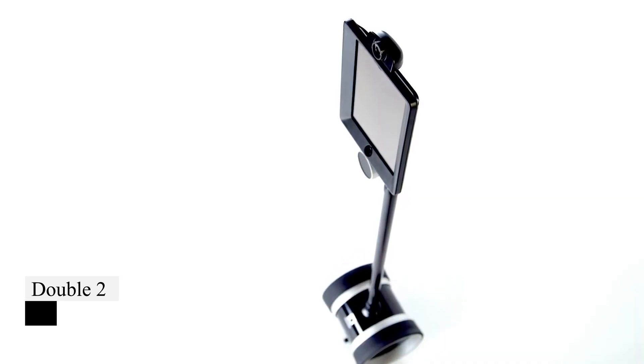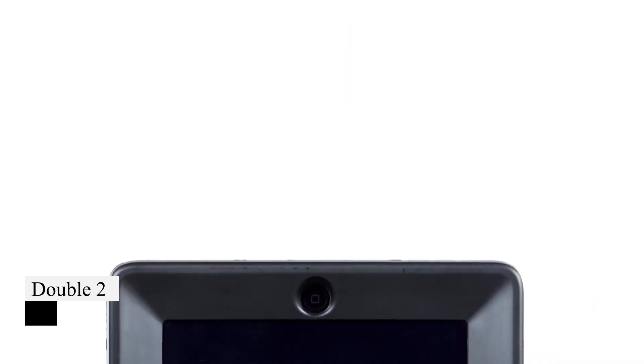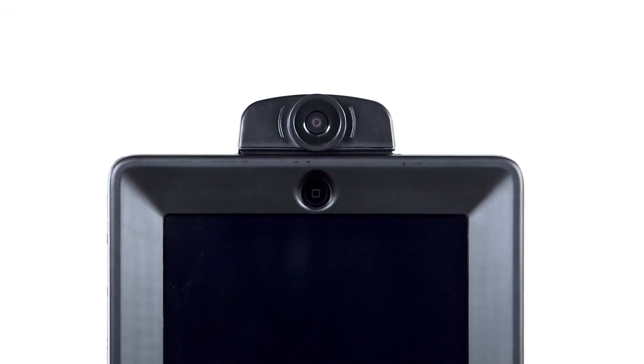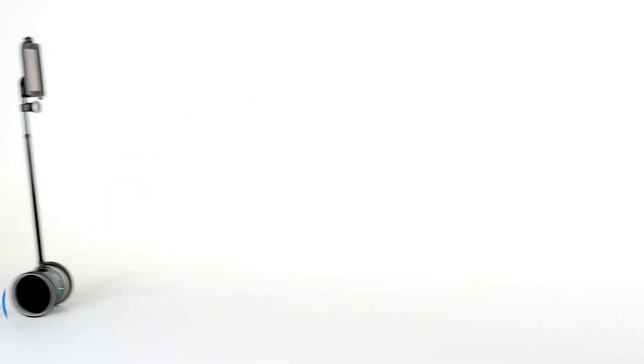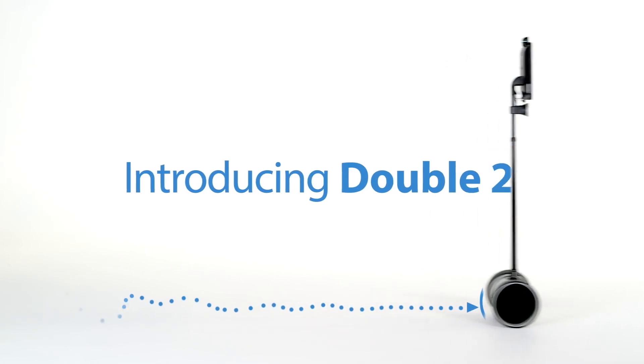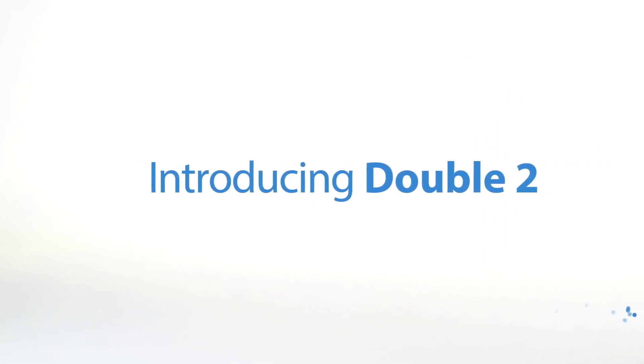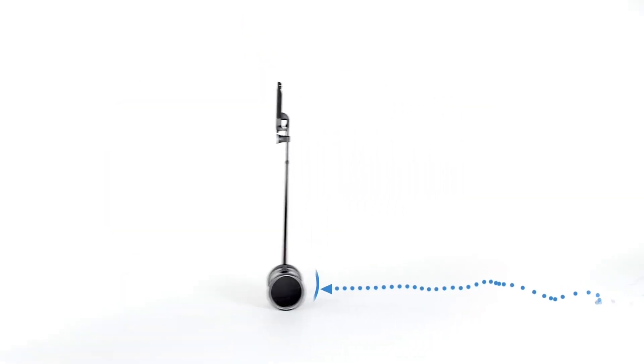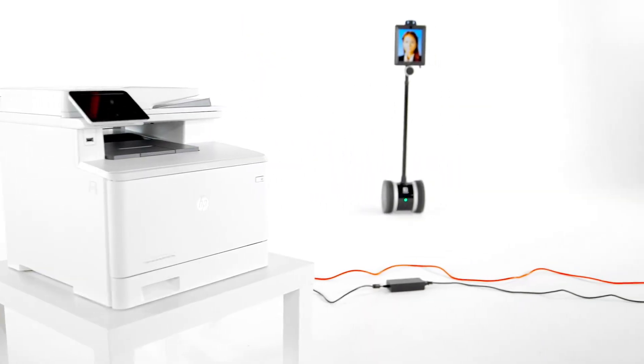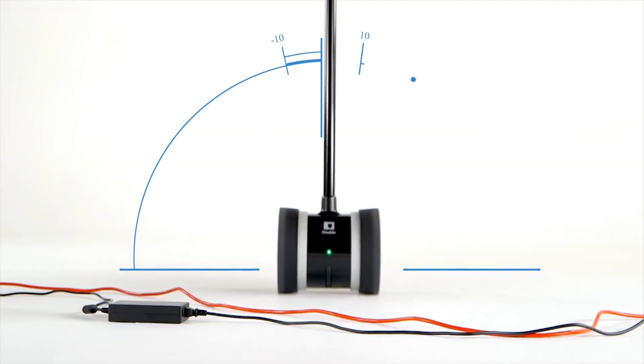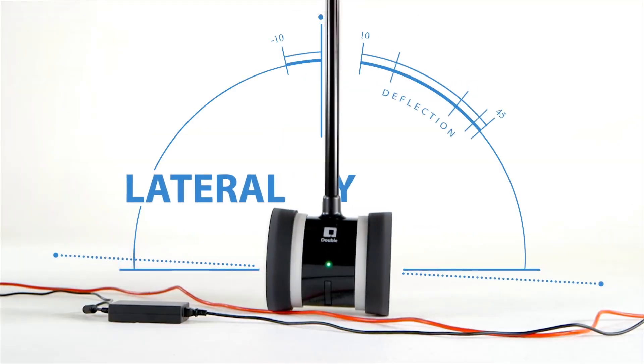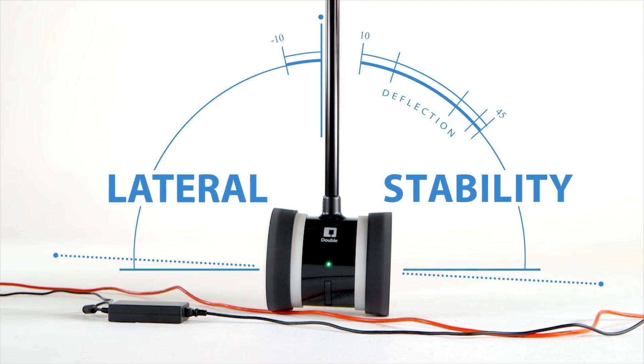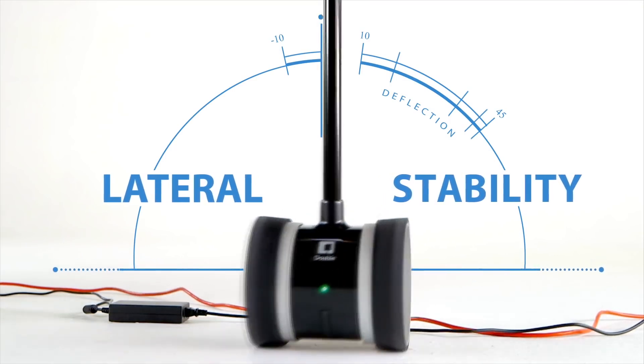Double 2. The Double 2, a remote-controlled mobile telecom system, empowers users to virtually join lessons, meetings, or events and engage in conversations. Equipped with lateral stability control, a power drive motor, a 150-degree wide-angle lens, and a 5-megapixel camera, it revolutionizes communication for today's remote workforce.